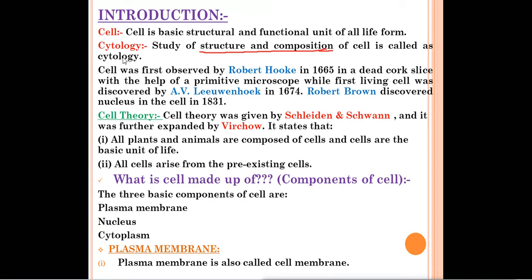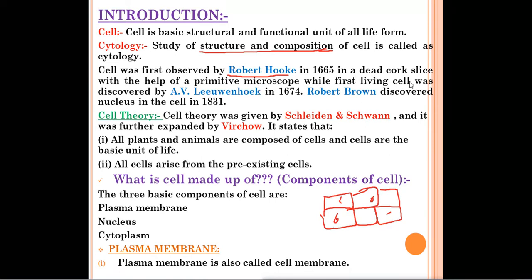Next, who discovered the cell for the first time? The cell was first observed by Robert Hooke. Robert Hooke was the first scientist who observed the cell in 1665. He took one bark of a tree and observed it under a microscope. He saw structures like compartments — like boxes — and he named those compartments as cells. He observed the cell in dead cork of a tree.